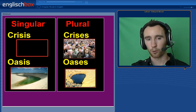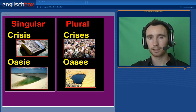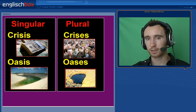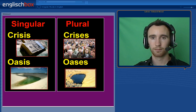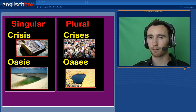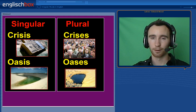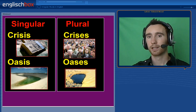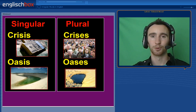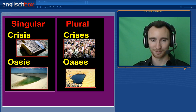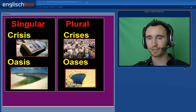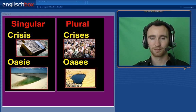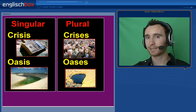One crisis — the financial crisis, for example. Hopefully we won't have another financial crisis, because then we would have two financial crises. One oasis and two oases.